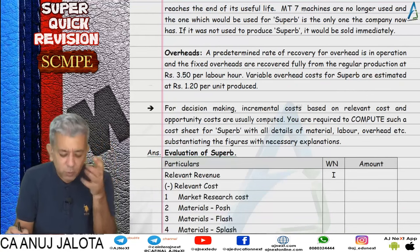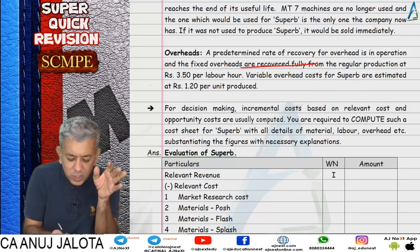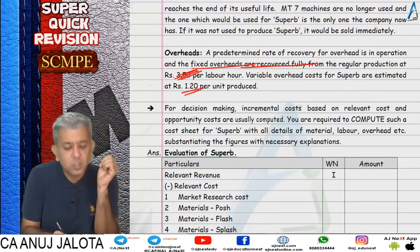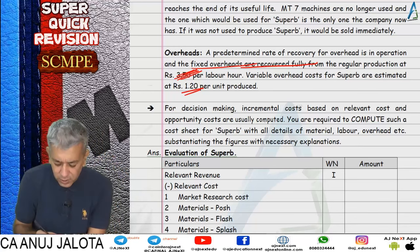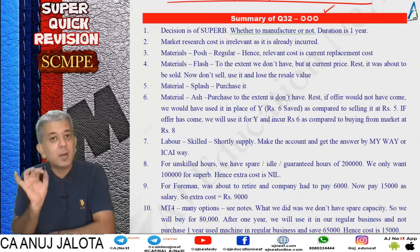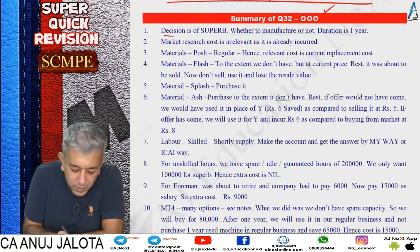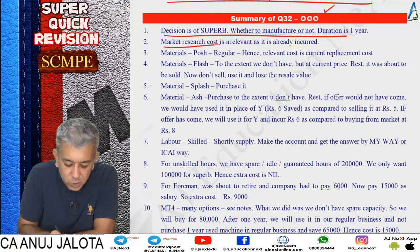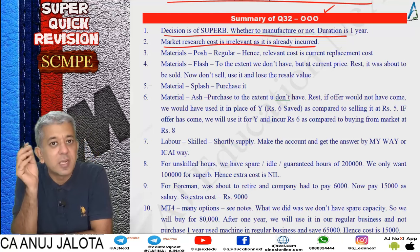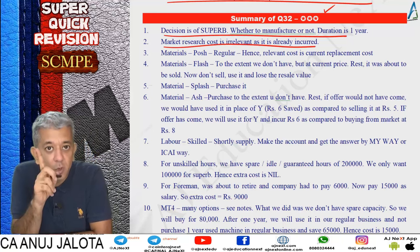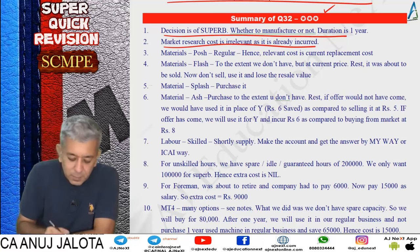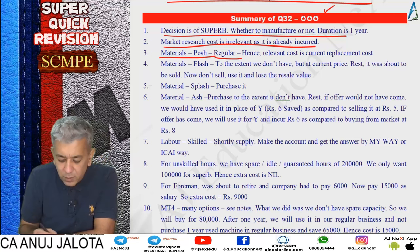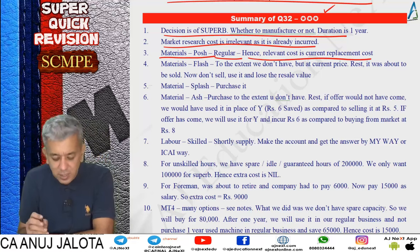For overheads: the fixed overhead absorption rate given is useless - no special fixed overhead expenditure is being incurred. Variable overheads are relevant. Quick recap: the Superb decision is whether to manufacture or not for one year. Market research cost is irrelevant as it is already incurred. Hence relevant cost is current replacement cost for materials.